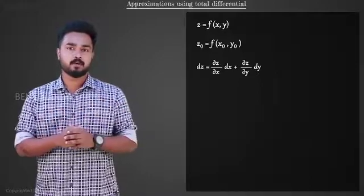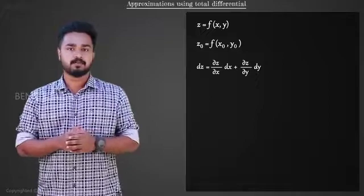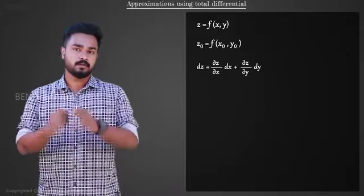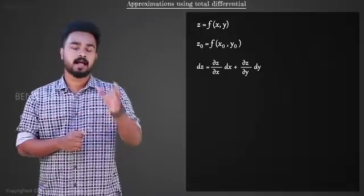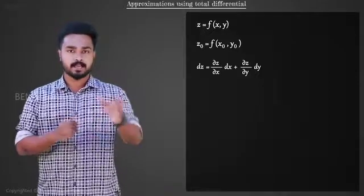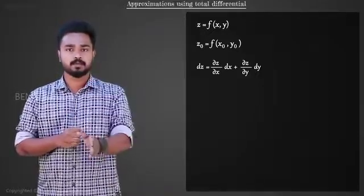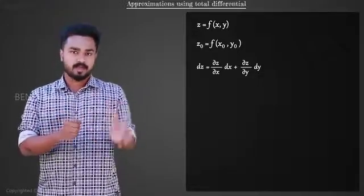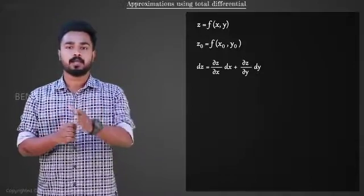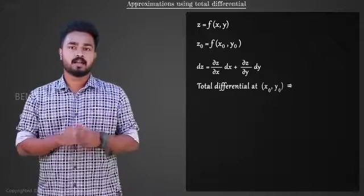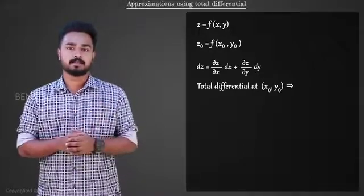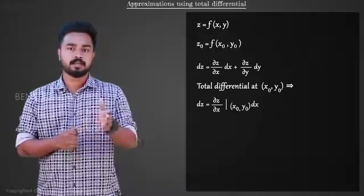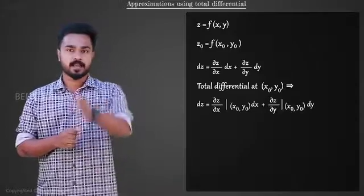As we move away from x0, y0, there will be a gradual change in the values of the partial derivatives ∂z/∂x and ∂z/∂y. However, keeping the partial derivatives constant at their values at x0, y0 — that is ∂z/∂x at x0, y0 and ∂z/∂y at x0, y0 — we can approximate the values of the function near the point x0, y0. The total differential at the point x0, y0 can be given as dz is equal to (∂z/∂x at x0, y0) dx plus (∂z/∂y at x0, y0) dy.